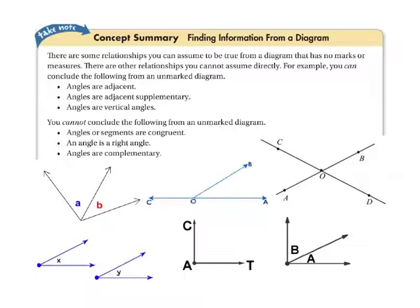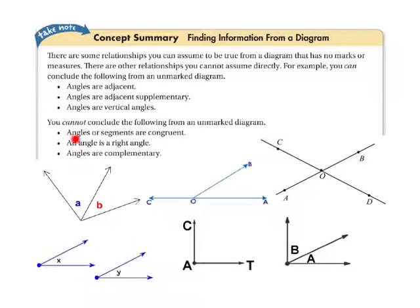Some relationships in geometry you can assume to be true from a diagram with no marks or measures. You can assume that angles are adjacent and supplementary, or that angles are vertical angles. However, you absolutely cannot conclude that angles or segments are congruent, that an angle is a right angle, or that angles are complementary if there are no congruent marks or angle measures listed.